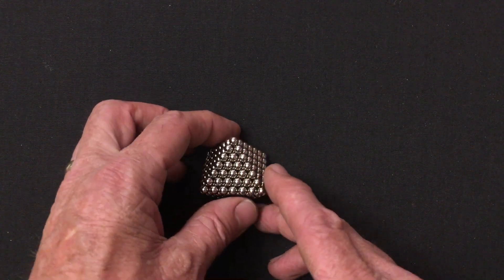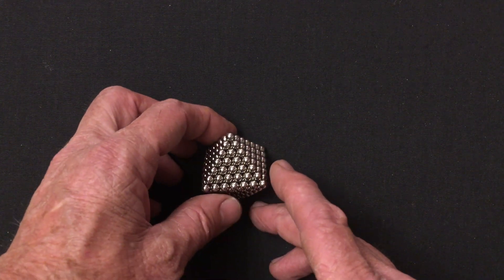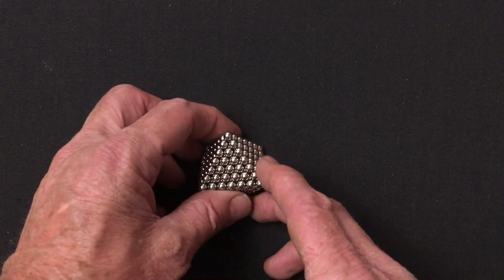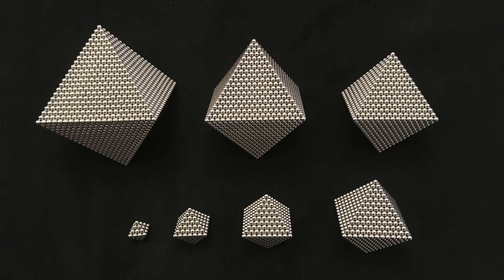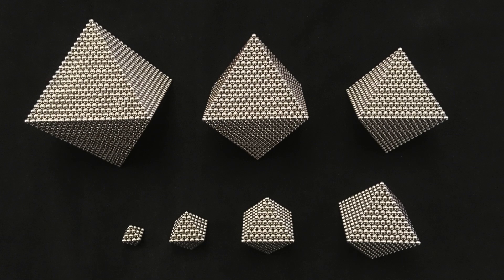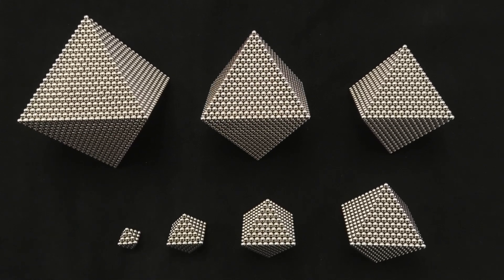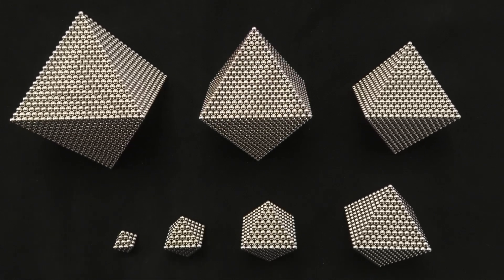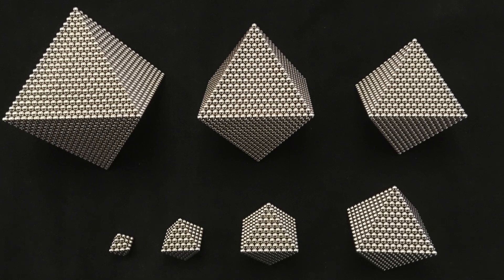The double-walled hollow octahedron can be built in a large number of sizes. Shown here are double-walled octahedron of edge count 4, 7, 10, 13, 16, 19, and 22.